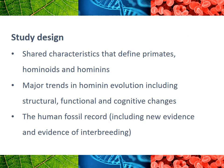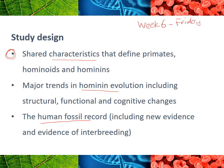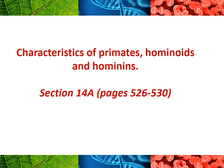The topic we're looking at over the next few weeks is human evolution. There are a few dot points: one is looking at characteristics of primates, hominoids, and hominins - which we'll cover today. Then we'll start looking at trends in hominin evolution and the human fossil record over the next couple of weeks. Also, pencil in now that the SAC will be week six on the Friday. We're still waiting for information from VCAA regarding how SACs will be run, but if they're online - which we assume they will be - that's when it will be. So we'll get started with the characteristics of primates, hominoids, and hominins. This is section 14A in your textbook, pages 526 to 530.